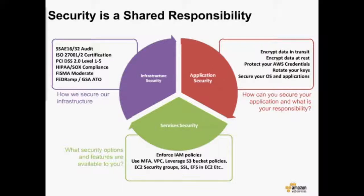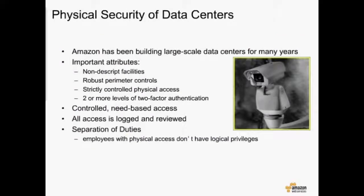I'm going to give an overview of how Amazon handles security for both our infrastructure and some of our services, and then Chris will talk about the AlertLogic solution and how that helps customers secure their applications and data. Starting at the very lowest level, the physical security of our data centers — we've been building and maintaining large-scale data centers for many, many years. Even before AWS, Amazon had quite a number of large data centers. We have some consistent attributes across all of our data centers.